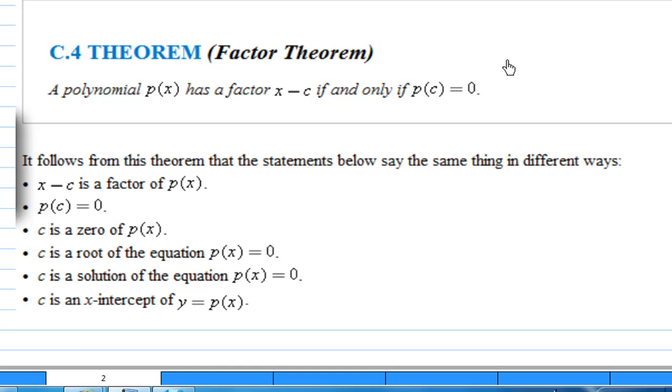Now this theorem can be said in different ways. For example, x minus c is a factor of p(x), p(c) equals 0, c is a zero of p(x), c is a root of the equation p(x) equals 0, c is a solution of the equation p(x) equals 0, c is an x-intercept of y equals p(x). It all means the same thing.